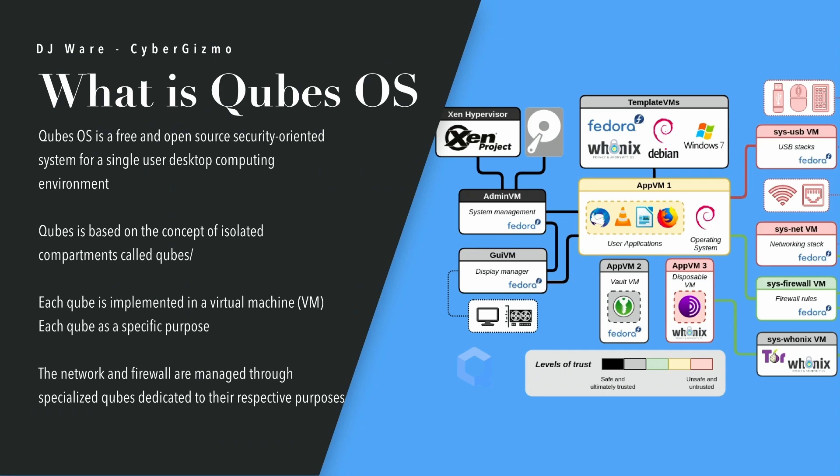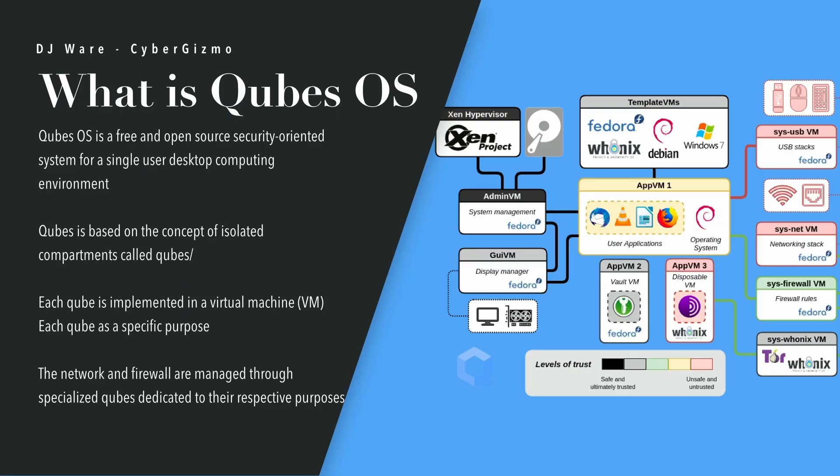You'll also notice things like a template VM and an application VM in the center. The template VMs are where you perform your updates and add software. If I had things that I wanted Fedora, for example, to offer to a particular VM that I was using, I would go into the Fedora template, add the packages I wanted, and set it up the way I wanted. Then the next time I launch the application VM associated with that template, it would pick up all the updates automatically.